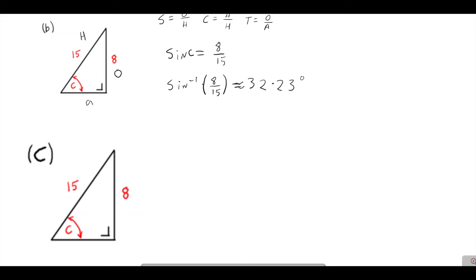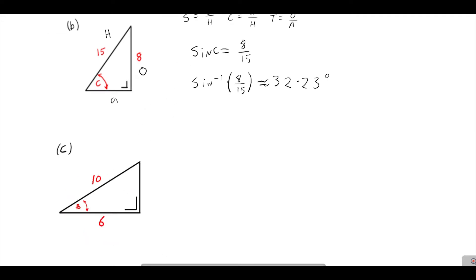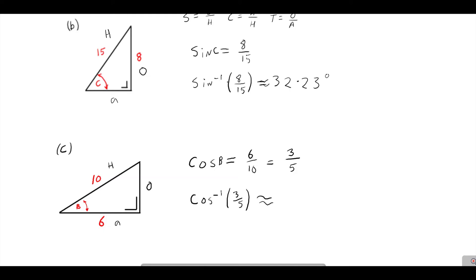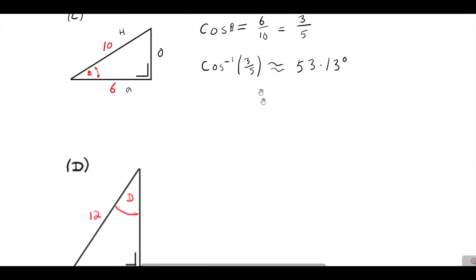For this triangle we have sides labelled: hypotenuse, opposite, and adjacent. We have the hypotenuse and adjacent given, so we use cosine. Cosine of B equals adjacent over hypotenuse, which is six over ten, simplifying to three over five. Taking the inverse cosine of three over five gives angle B, which is roughly equal to 53.13 degrees.